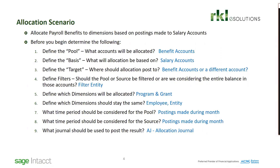Let me give you an example. Let's say I want to allocate my payroll benefits based on the breakout of my salary accounts. Before you sit down to do the allocation, you want to define the pieces of the allocation. What is the pool? In this case, it's my benefit accounts — those are the accounts that will be allocated. What is the basis? It's going to be based on my salary accounts. Define the target — where should I put the end result? I can put the result back into the benefit account, or I could choose a different account. Do I need to define any filters? You can define filters on both the pool and the source. And you'll want to know what dimensions you're allocating — in this example, I'm going to allocate the program and the grant.